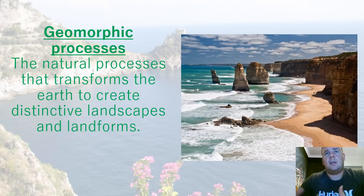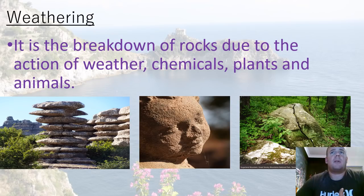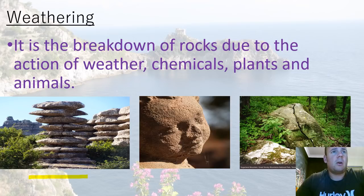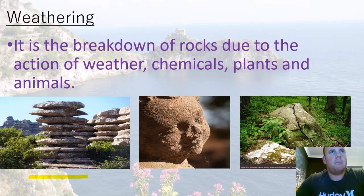Geomorphic processes can be split up into different sections. The first one is weathering — this is where rocks are broken down due to the action of weather, chemicals, and plant and animal activity. The picture on the left with the rocks has been broken down because of the weather; sand carried by wind has weathered that rock down.